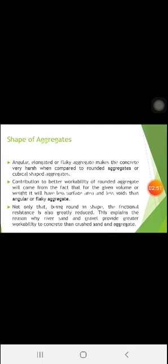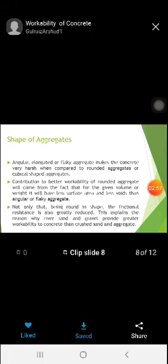After considering the size, the next one is the shape of the aggregate. To determine the shape of aggregates, we already know about two tests — mainly elongation and flakiness. If the aggregate is flaky and elongated, the concrete will be more workable. If we use a completely rounded shape of aggregate, the concrete will be even more workable, but in some cases workability should be restricted.